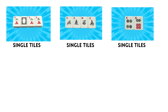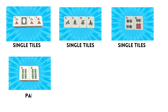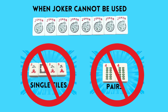Our next grouping is the pair. A pair is any two tiles that sit next to each other that match. This can be any tile, with the exception of the Joker. A pair can be two flowers, two dragons, two wind tiles, or two suit tiles. But keep in mind, as we learned earlier, you cannot use a Joker in either a single grouping or in a pair.